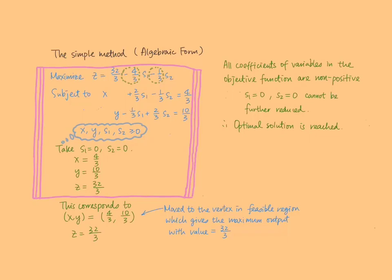Again, we make a judgment on whether we have reached an optimal solution. This time, since all coefficients of the variables in the objective function are negative, and we have taken s1 and s2 as 0 already, we cannot further reduce them to give a higher value of z because it would make them negative, which is not allowed. Thus the optimal solution is reached. For our original problem, the objective function has a maximum value of 32 over 3, achieved by taking x equals 4 over 3 and y equals 10 over 3.